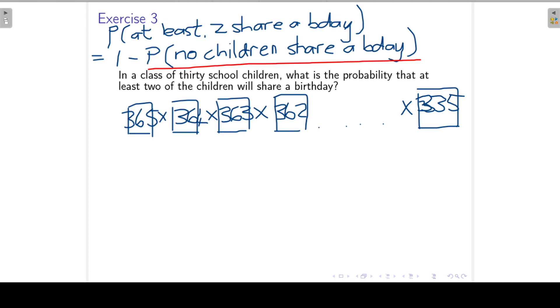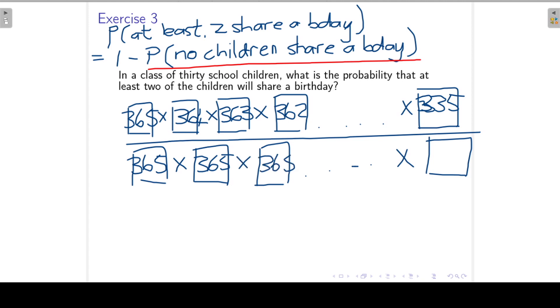And now to find the probability, we want to divide it by the total number of ways in which 30 children can have their birthdays. So that will be 365 for the first position, 365 for the second one, and that would be the same for all of them. So the number of ways in which 30 people can have their birthdays, if there are no restrictions on whether there are repetitions or not.